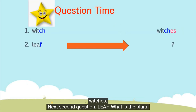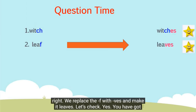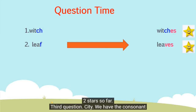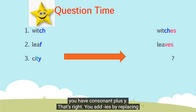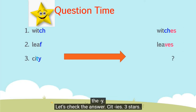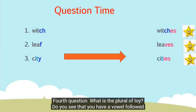Second question: leaf. What is the plural form of leaf? It ends with F, so what do we do? That's right — we replace the F with VES and make it leaves. Let's check — yes, you've got two stars so far. Third question: city. We have the consonant T followed by Y. What is the rule to form the plural when you have a consonant plus Y? That's right — you add IES by replacing the Y, so city becomes C-I-T-I-E-S. Three stars!